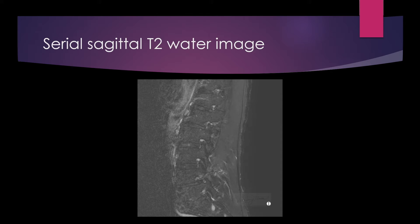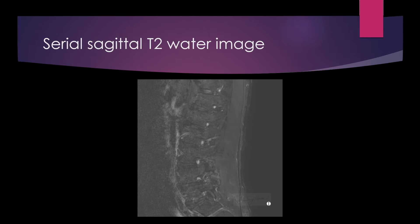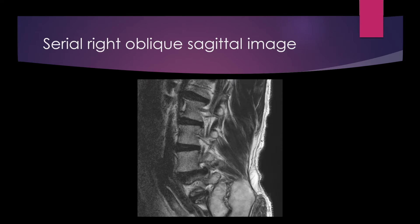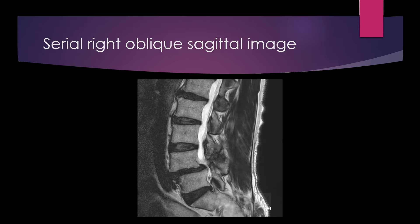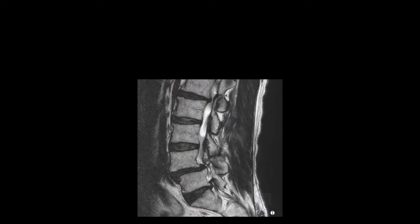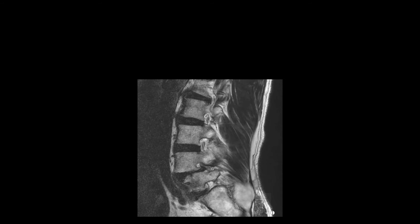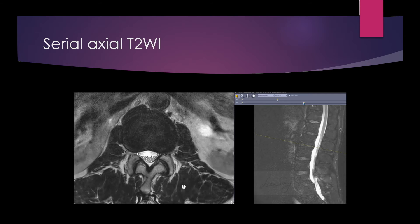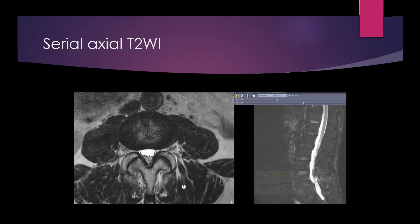Sagittal T2 image shows high-signal bone marrow edema in the subchondral region of L4 and L5 facet joint and defect area. Right oblique image shows subarticular stenosis and foraminal stenosis at both L4 and subarticular levels. Serial left oblique image. Axial T2-weighted image shows anterior-posterior spinal canal widening at L4-L5 level.